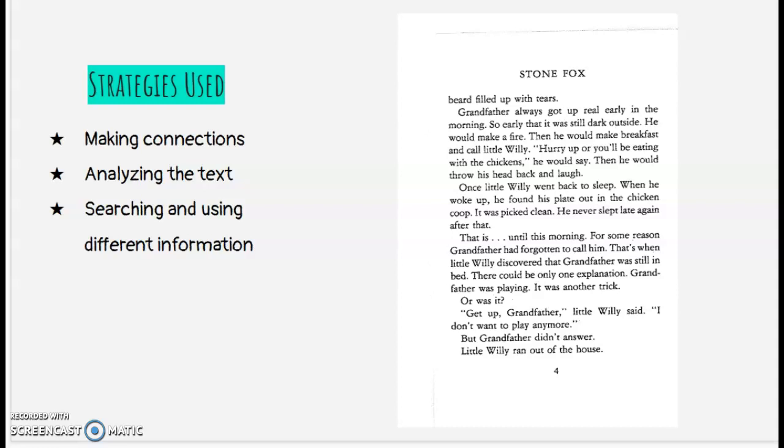So I was thinking about analyzing the text in the third paragraph, that is dot dot dot until this morning. I feel like the ellipses there really are an important thing, and so I feel like the author intentionally let that linger to draw attention to this specific morning. And then I was searching and using different information because Willie again thought there was only one explanation, that his grandfather was playing. So I was thinking back to when Willie thought that his grandfather was playing, but he really wasn't.